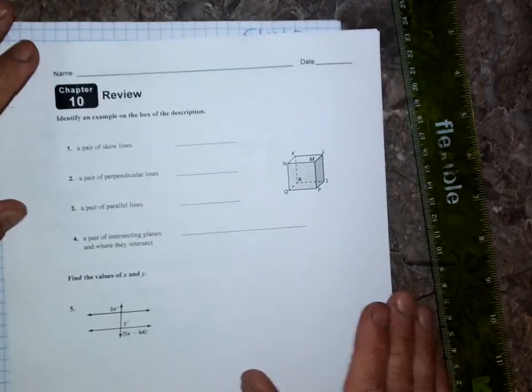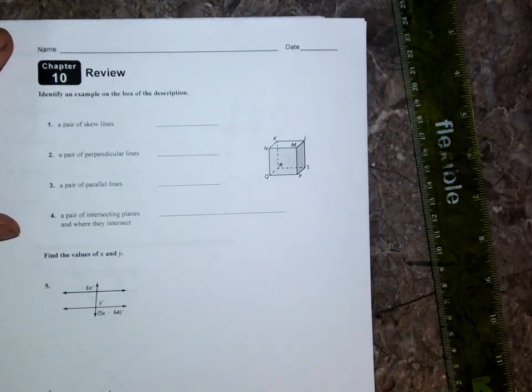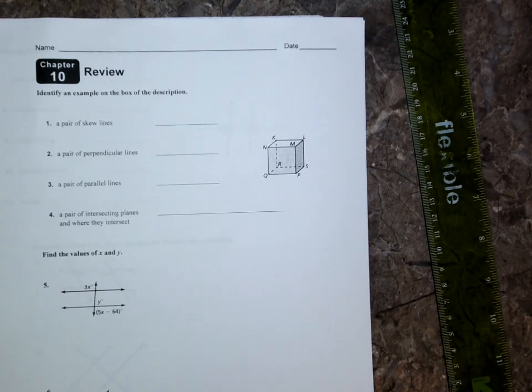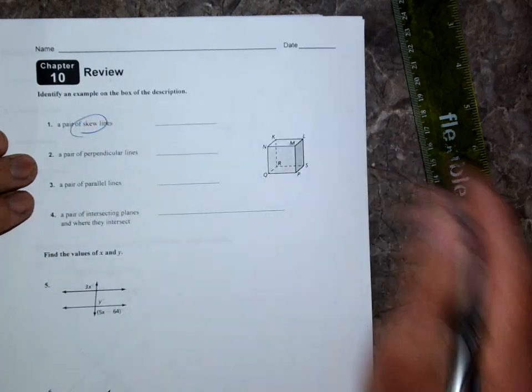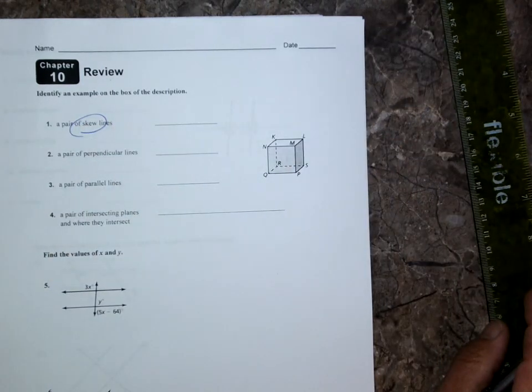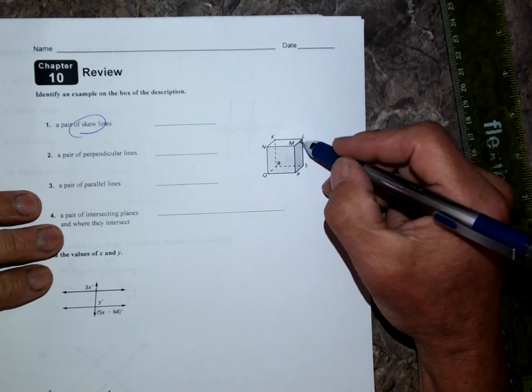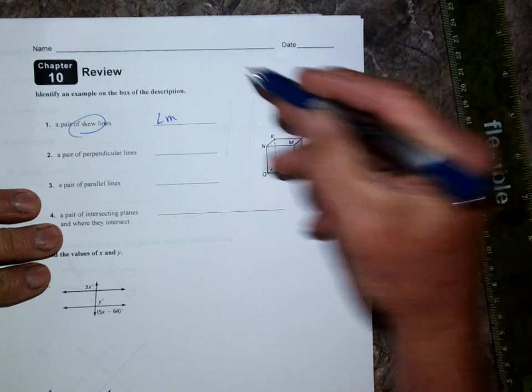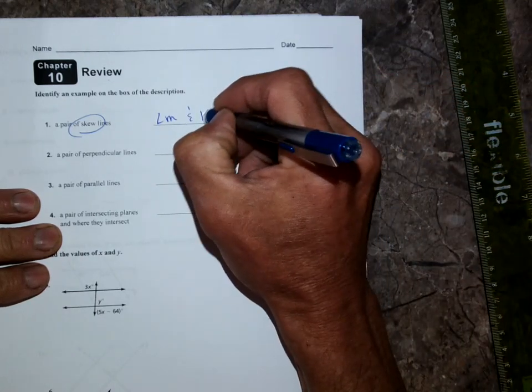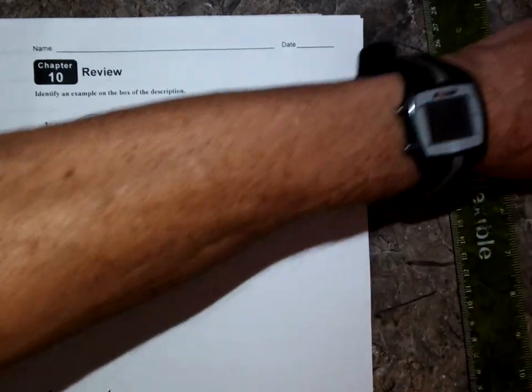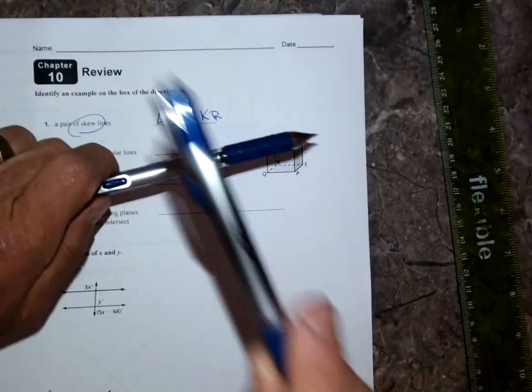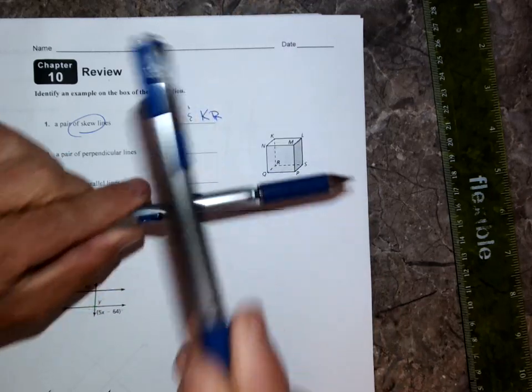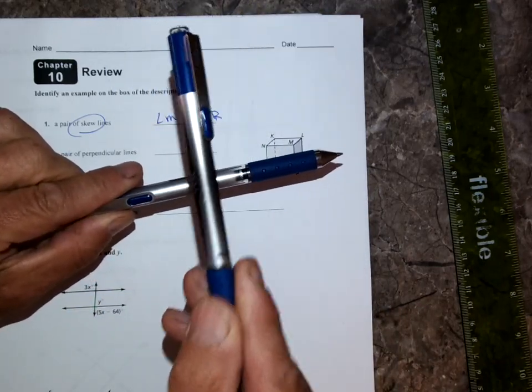Now the review. If you need and want to copy the review, let me know. I'm just going to go through it. If you want to copy it down on a piece of paper and show it to me, that's fine. Skew lines are lines that are not parallel and not going to intersect. For instance, like LM and KR—they don't intersect but they cross over each other in different planes.